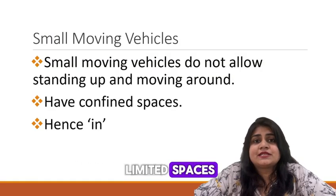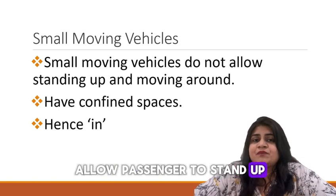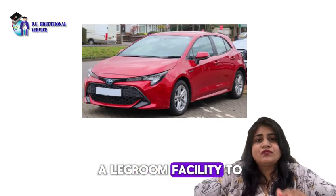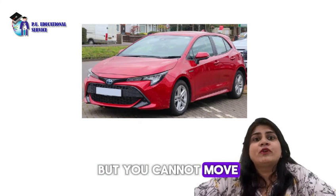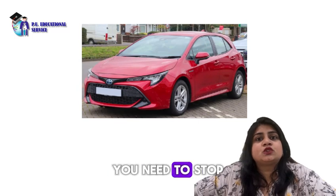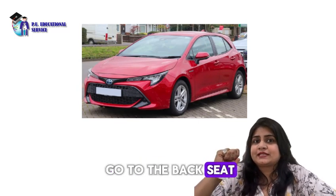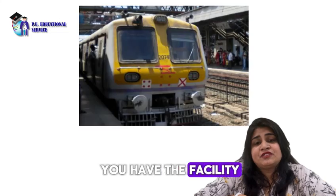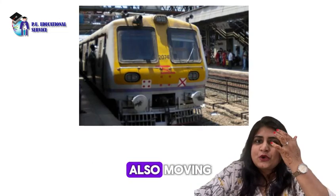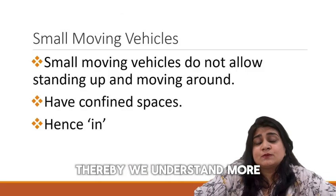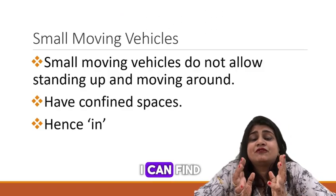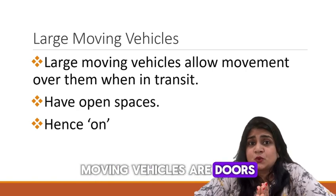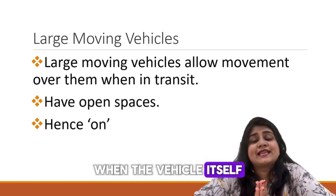Small moving vehicles have limited spaces and do not allow a passenger to stand up when they are in transit. For example, in a car, you only have a legroom facility to stretch your legs and cannot move around while the car is being driven. Whereas large moving vehicles, like a train, allow you to get up from your seat and move around even while the vehicle is moving. So, small moving vehicles are confined spaces, while large moving vehicles allow passengers to move freely in transit.